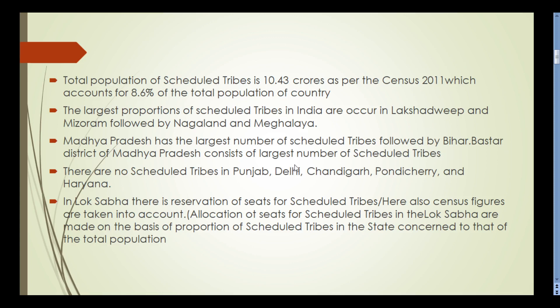There are no scheduled tribes in Punjab, Delhi, Chandigarh, Pondicherry, and Haryana. In the Lok Sabha, there is reservation of seats for scheduled tribes. Allocation of seats for scheduled tribes in the Lok Sabha is made on the basis of the proportion of scheduled tribes in each state, using census figures.